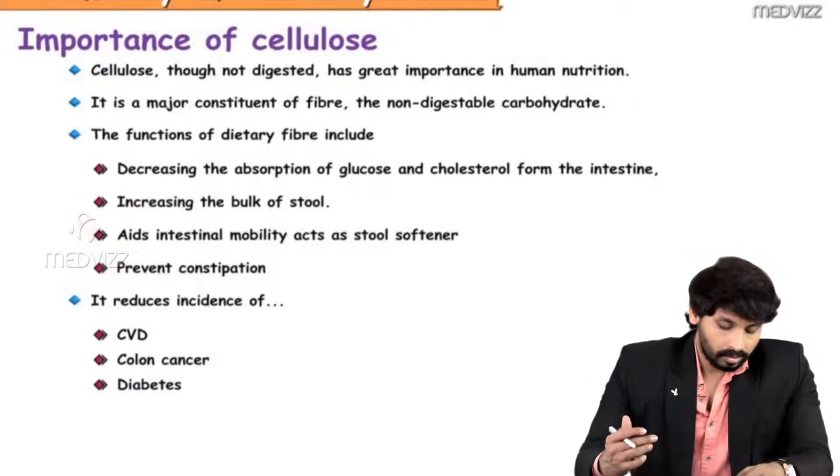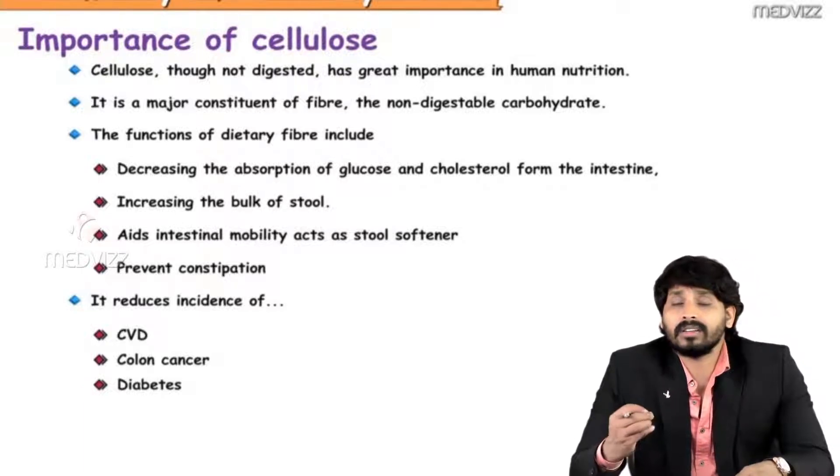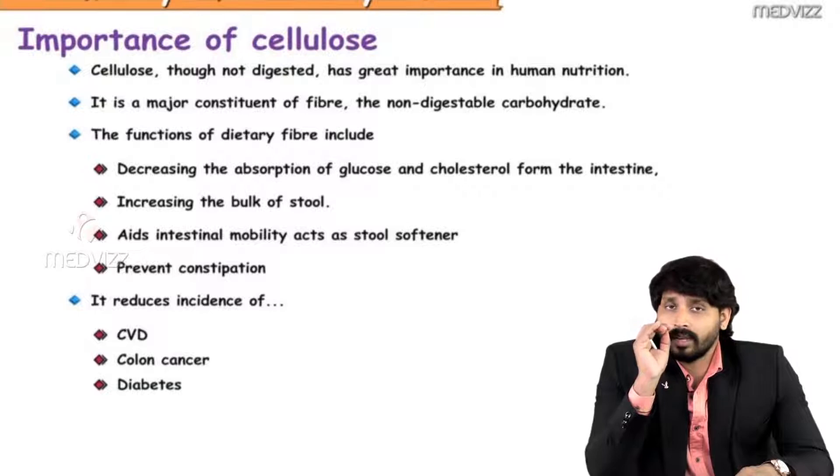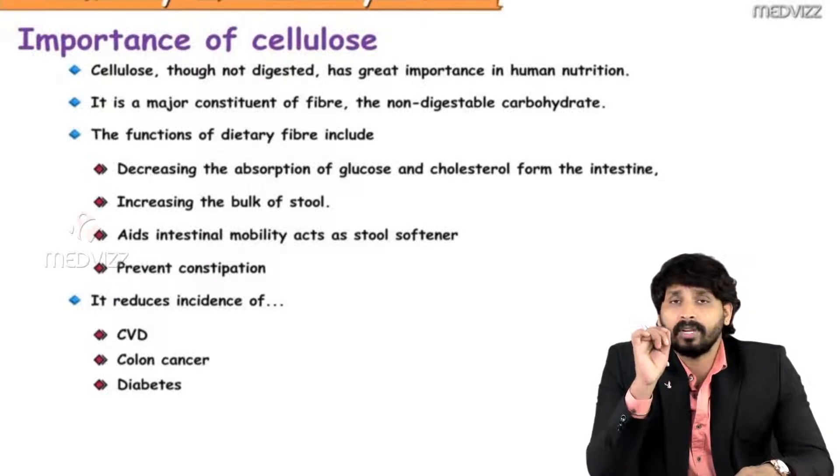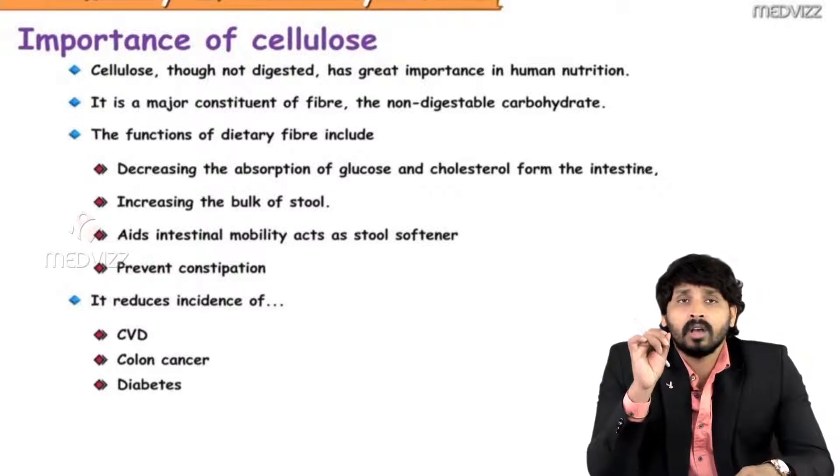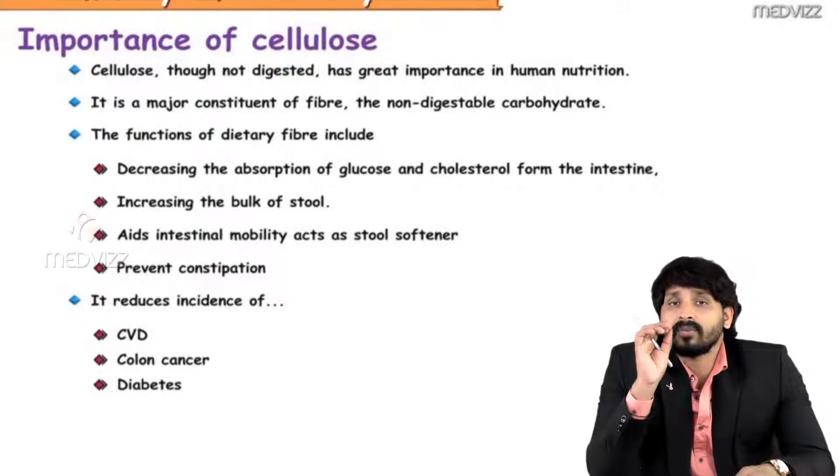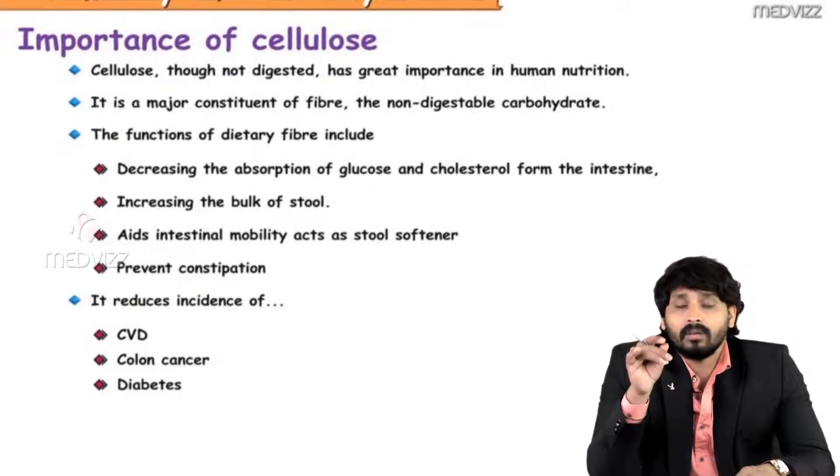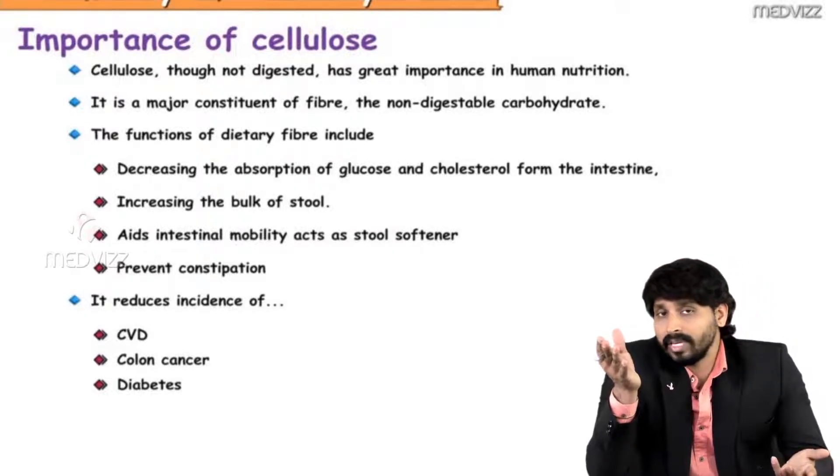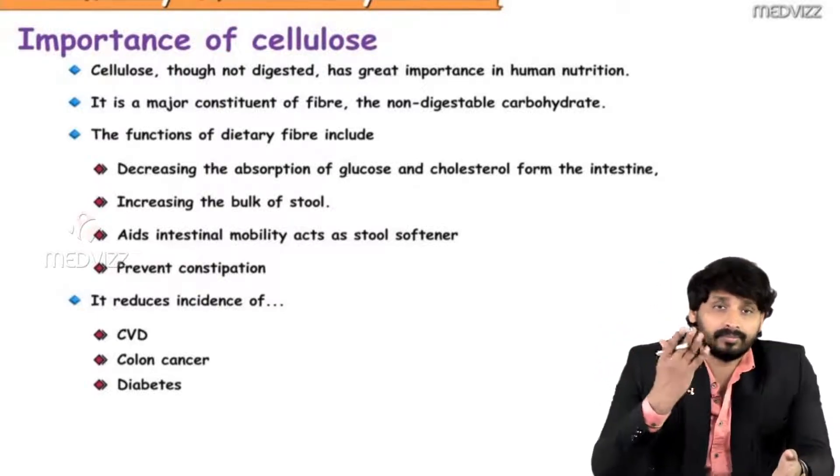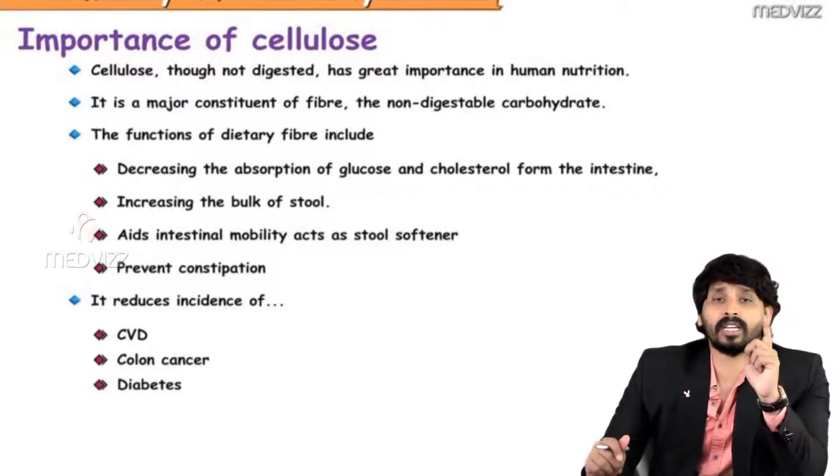Importance of cellulose: though it doesn't get digested, it has greater importance in human nutrition. Main dietary fiber. Nowadays, most dietitians prescribe, if anyone wants to be diet conscious or dieting, you should consume food which is rich in dietary fiber. That means unfried vegetables like cooked vegetables, raw vegetables, raw fruits, all these have cellulose. We don't get any energy from cellulose because we cannot digest it and cannot be absorbed. But it does carry some physiological significance. It increases the peristaltic movement, bowel movements of the intestine.